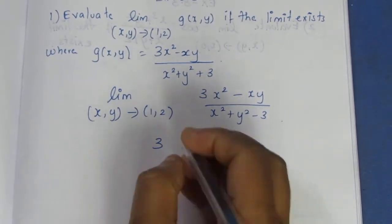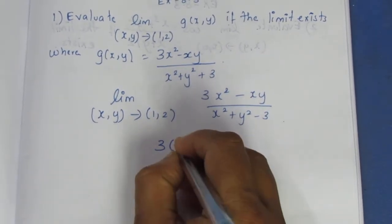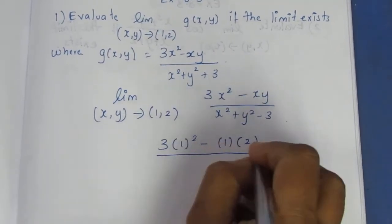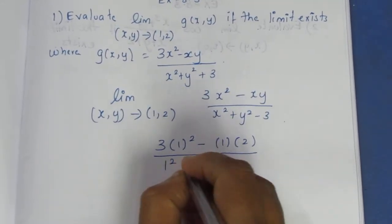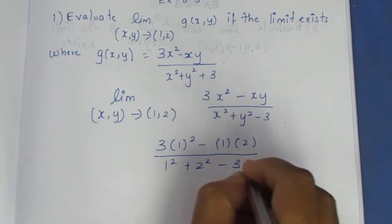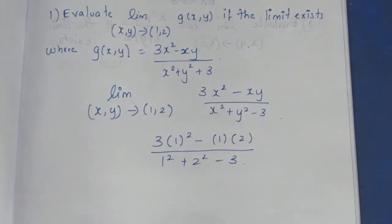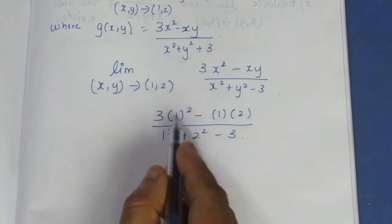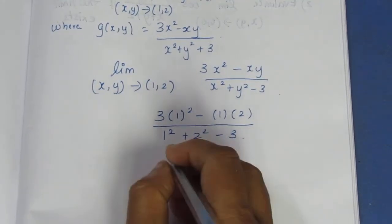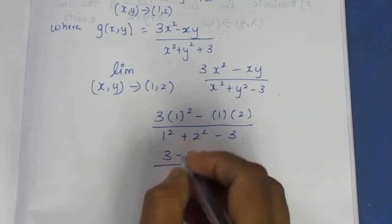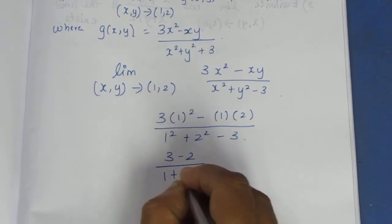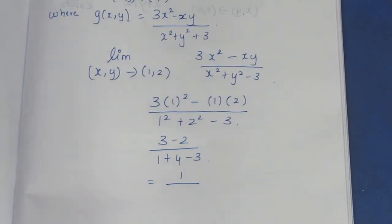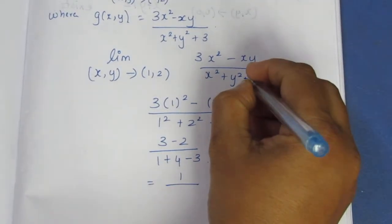Limit equals 3 into 1 squared minus 1 into 2, divided by 1 squared plus 2 squared minus 3. So this is 3 minus 2, divided by 1 plus 4 minus 3, which gives 1 over 2.